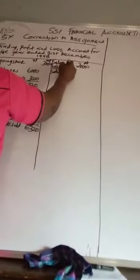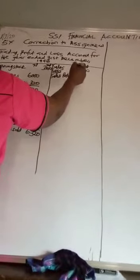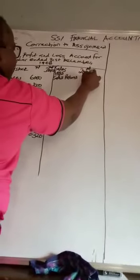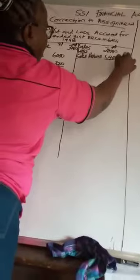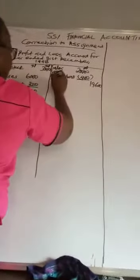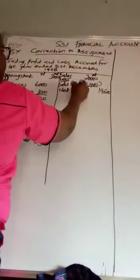So you take away sales returns of 400 naira. This will give us net sales of 19,600.